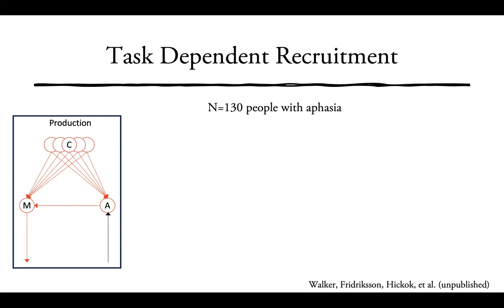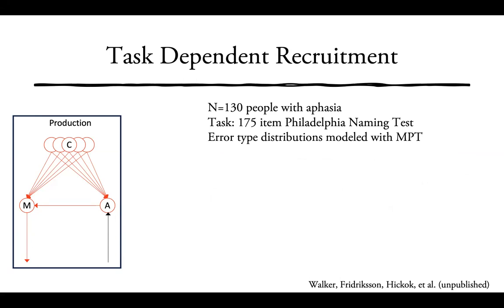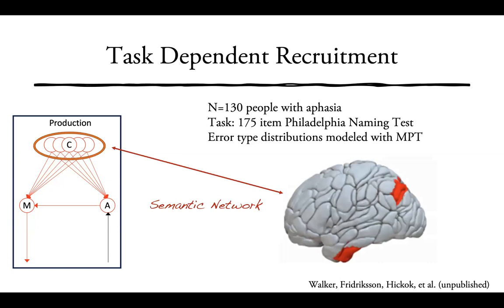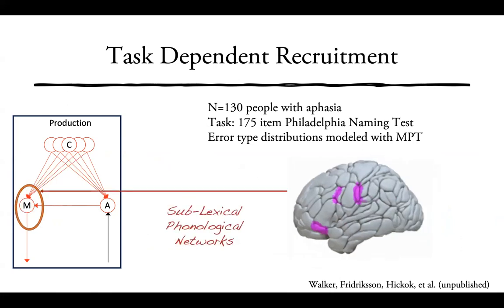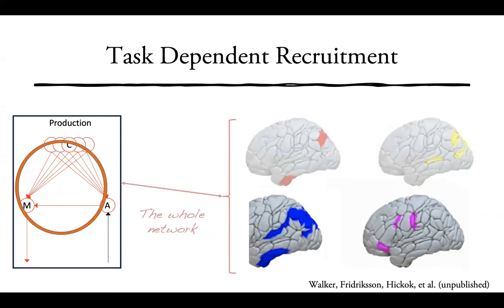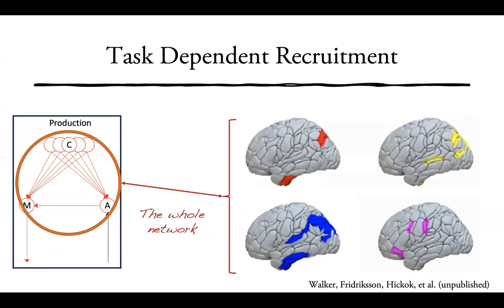This is unpublished work with Grant Walker and Julius Frederickson involving 130 people with aphasia, using the 175-item Philadelphia Naming Test. Using the MPT model, we can identify the semantic network — classic ATL and posterior temporal-parietal junction — as well as a couple of different lexical level processes including lemma-level and lexical-phonological networks. We can also identify sublexical phonological networks in the dorsal stream.